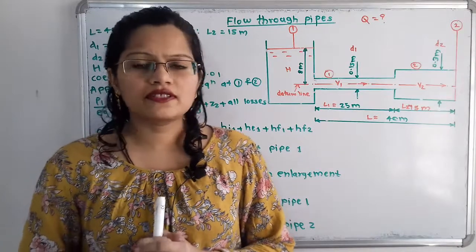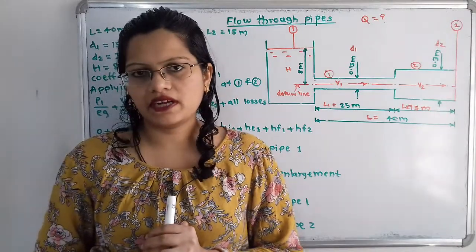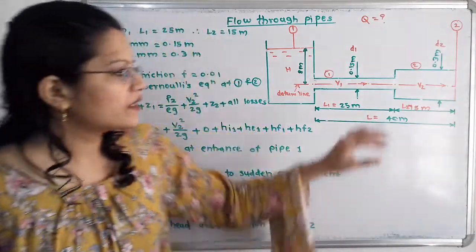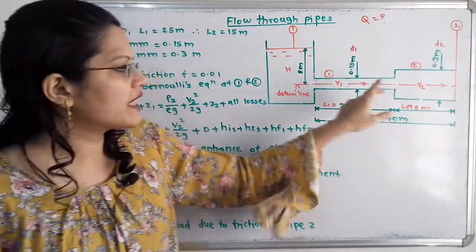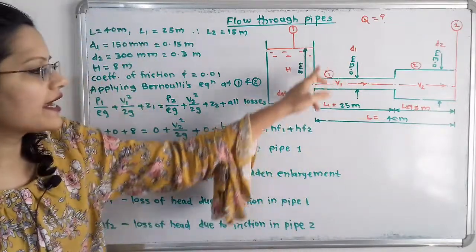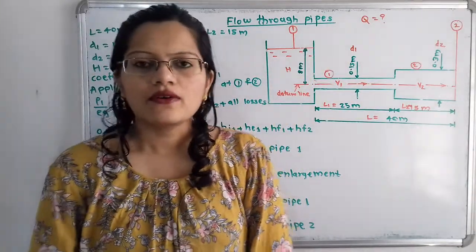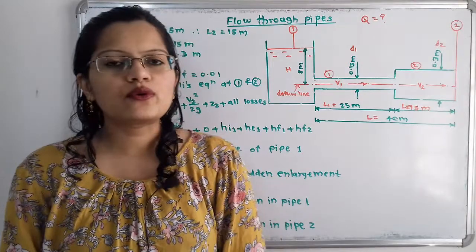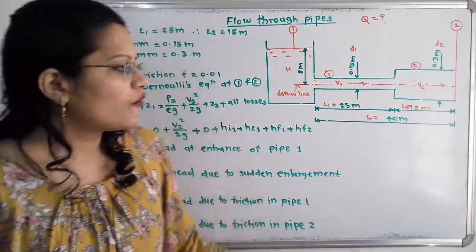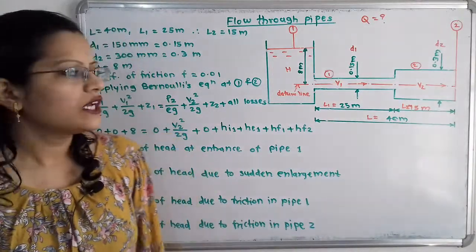Let us first understand the diagram as per the given data. If we observe, there is a pipe with different cross-section areas, with one end attached to the tank. The total length of pipe is 40 meters, so L is equal to 40.